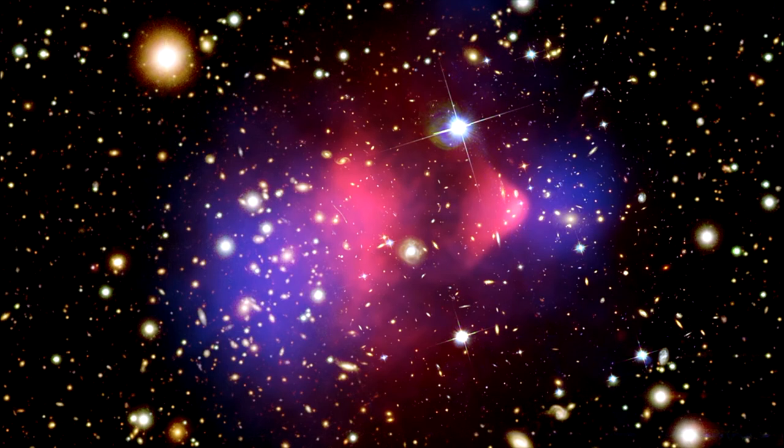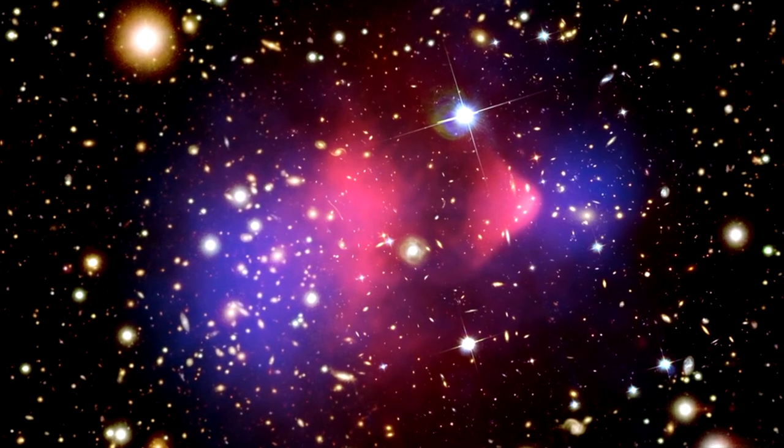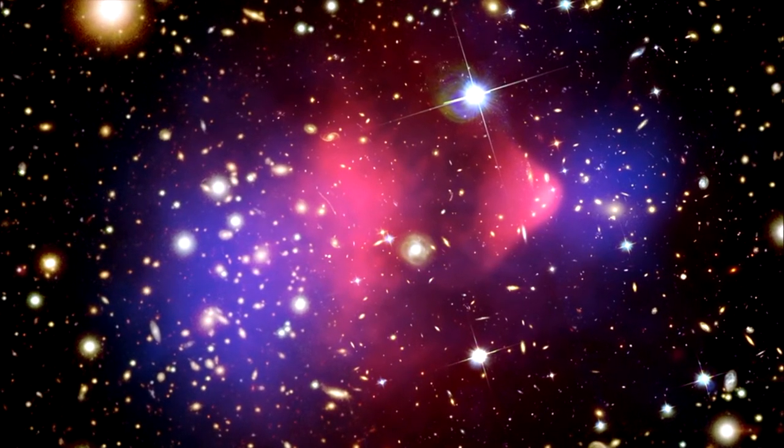When we superimpose the dark, baryonic, and visible components of the cluster's mass, we get the full picture. The galaxies and the dark matter have traveled a great deal further than the gas. This indicates that the galaxies and dark matter in the two colliding clusters did not interfere with each other. In other words, they passed through each other without slowing down. On the other hand, during the collision, the gas clouds were slowed by a drag force, similar to air resistance. This combination had the effect of separating the gas from the dark matter. This separation is considered to be direct evidence that dark matter exists.